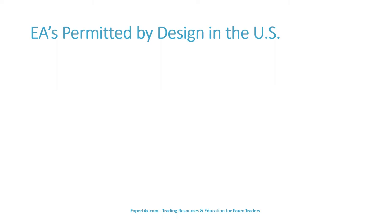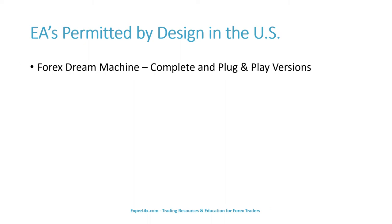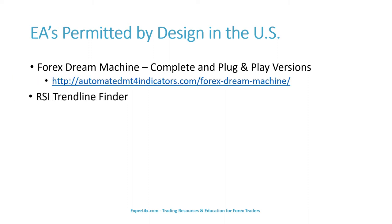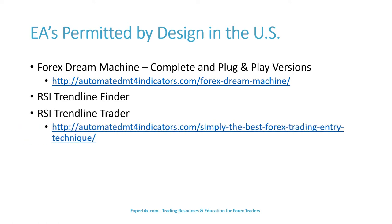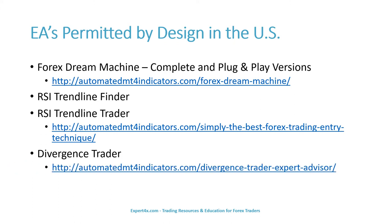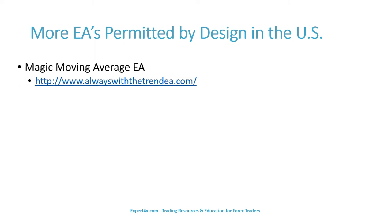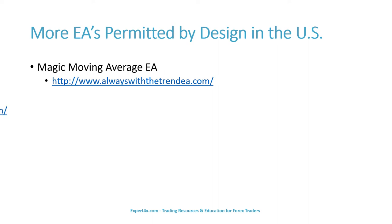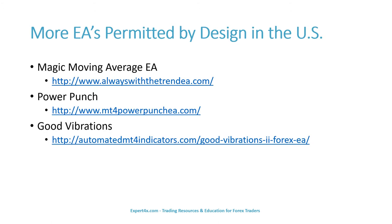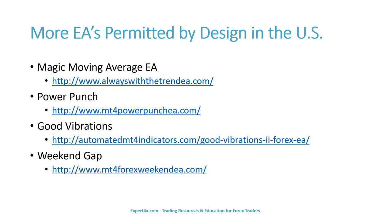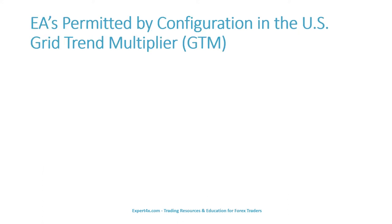The following EAs are permitted by design in the United States: the Forex Dream Machine complete and plug-and-play versions, the Magic Moving Average EA, Power Punch, Good Vibrations, and the Weekend Gap. Now we are going to discuss one of Expert Forex's most popular EAs, the Grid Tread Multiplier, or GTM.